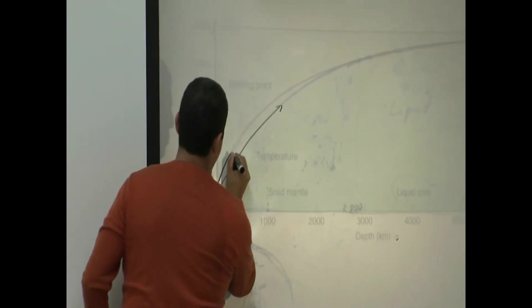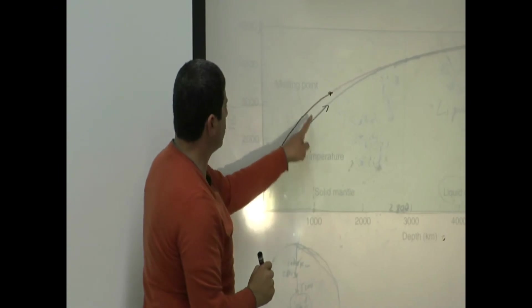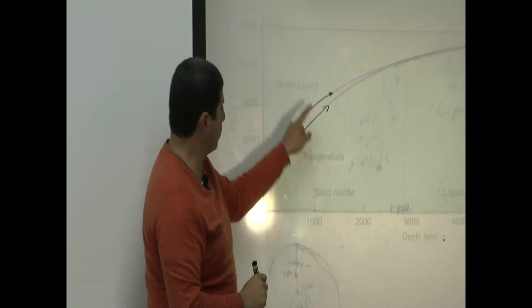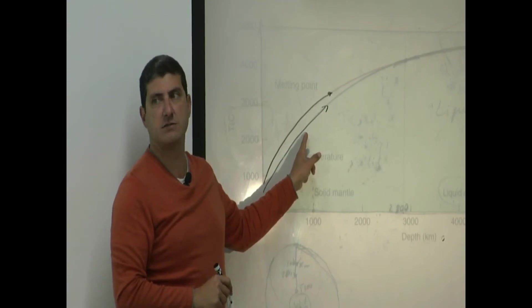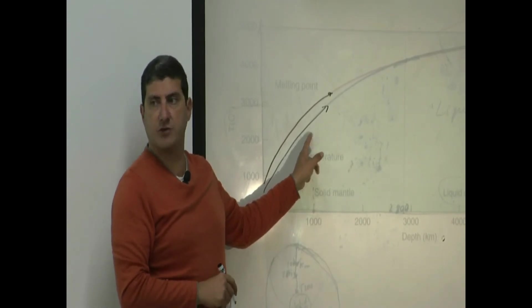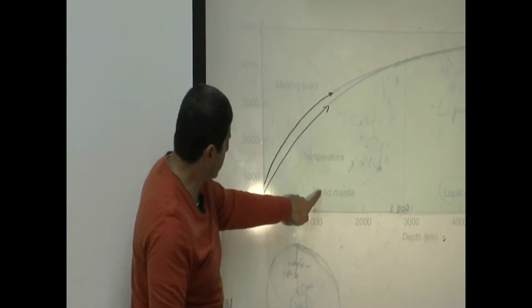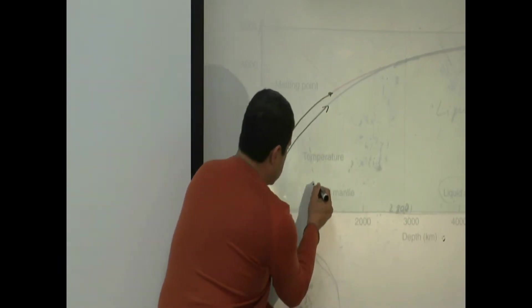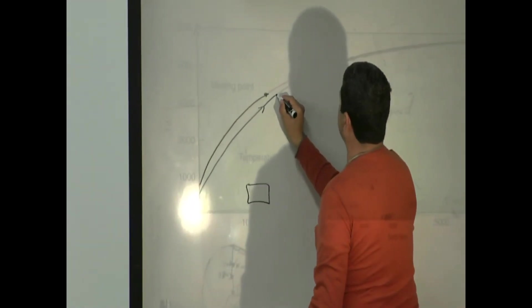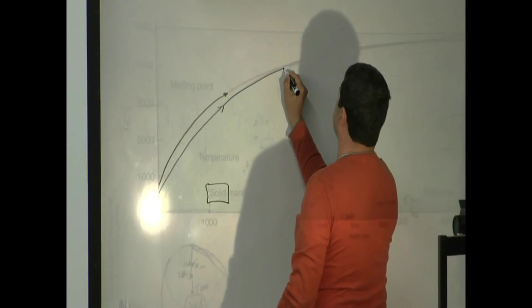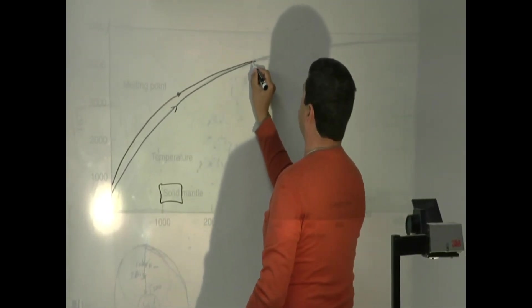So if the melting point is above the temperature, the object remains solid. Even though it's getting hotter, the melting point is also rising. That's why the mantle is solid. Now what happens? The temperature rises and the melting point rises. They crisscross.